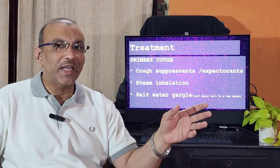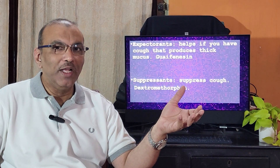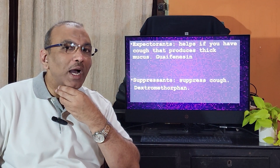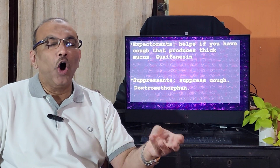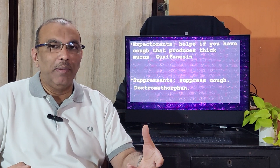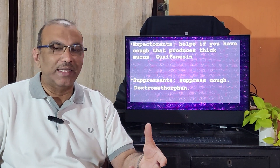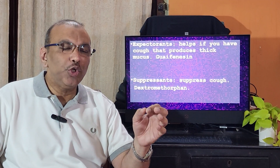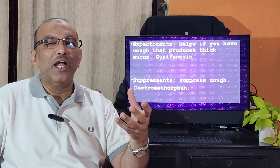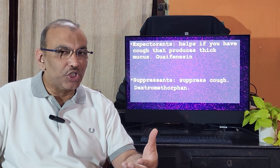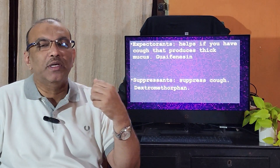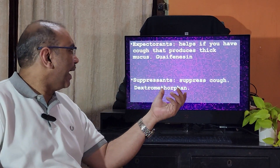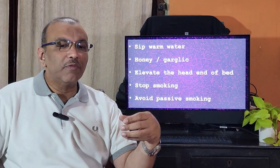Steam inhalation is also helpful, along with gargling. You can gargle with plain warm water, or add salt, turmeric, neem leaves, or tulsi leaves. When you gargle, make sure to gargle for at least 30 seconds, do it two to three times, and after gargling please do not eat or drink anything for the next one hour so that you get the local effect of the gargle.